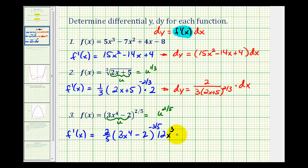Now that we have the derivative, we can determine differential y. Let's rewrite this as 24x³ in the numerator. The denominator is going to be 5 times the quantity (3x⁴ - 2) to the three-fifths power times differential x, or dx.